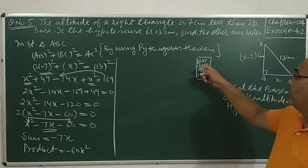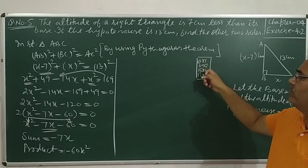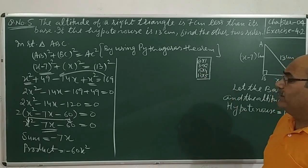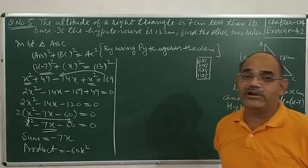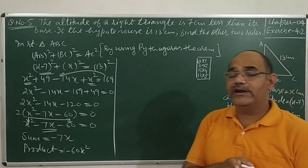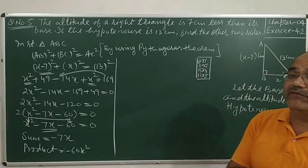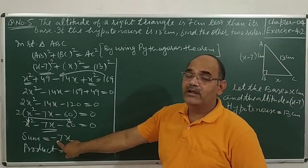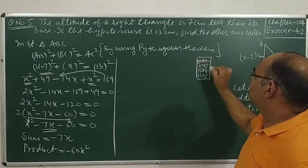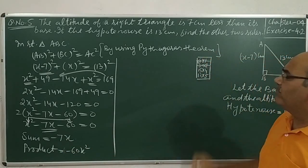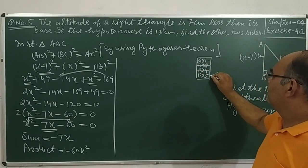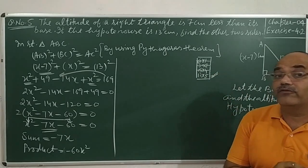We can write 60 as the product of 60 times 1, 30 times 2, 15 times 4, and 12 times 5. Since the product is negative, it means one factor is positive and one factor is negative. The bigger factor is negative. We check: the factors 12 and 5 give a difference of 7, which matches our middle term.